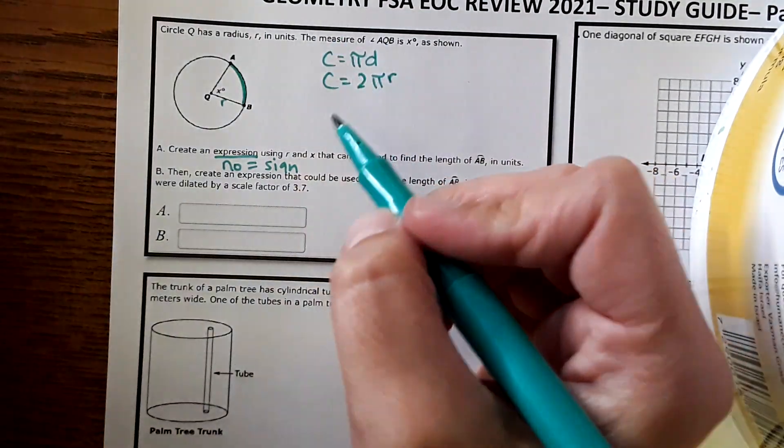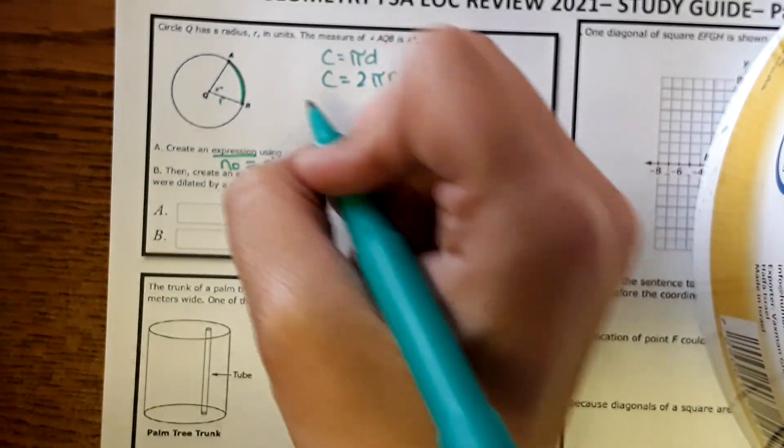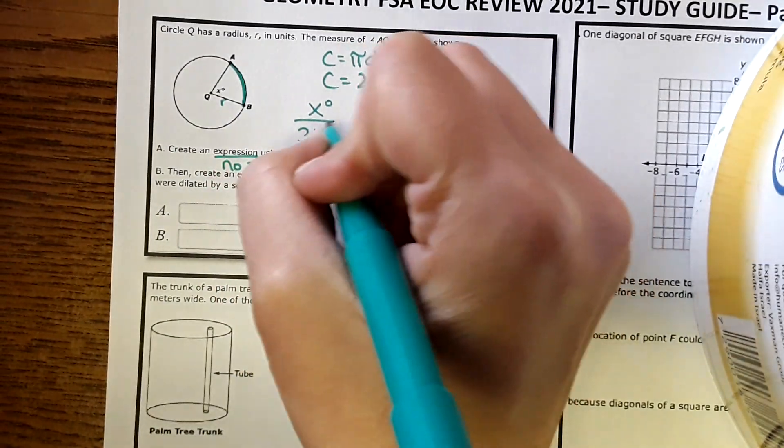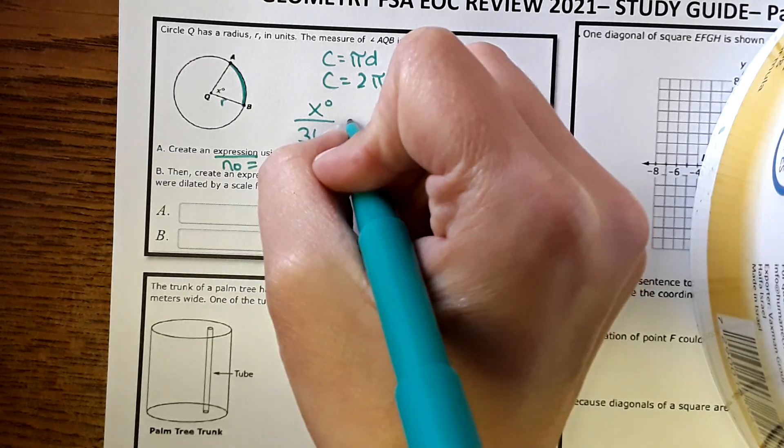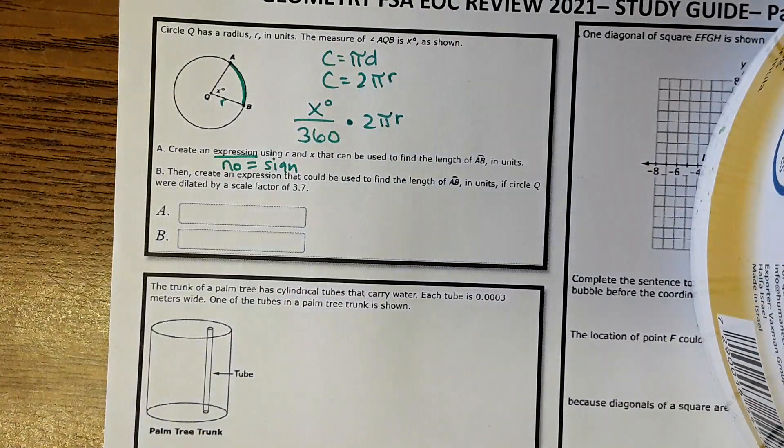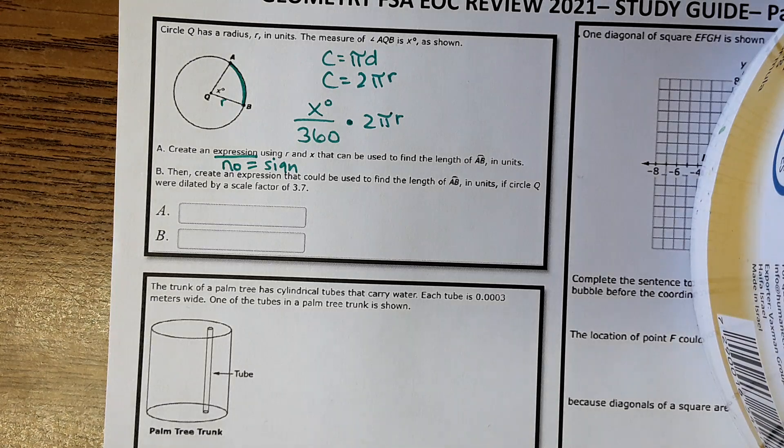And to find the length of just this part, you would set up a fraction X degrees over 360. So that would be the fraction of the circle times the radius.